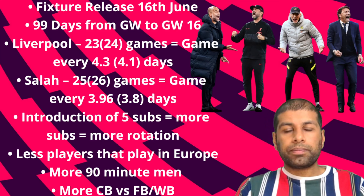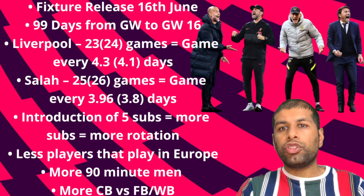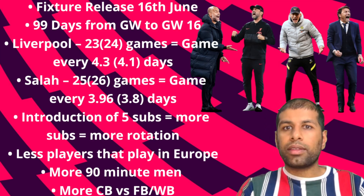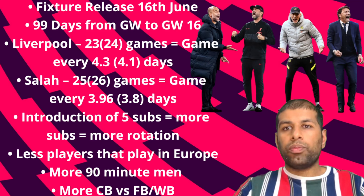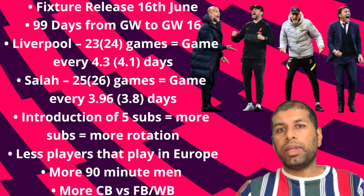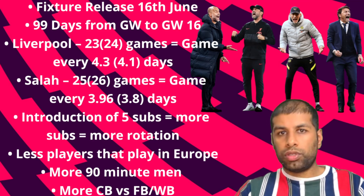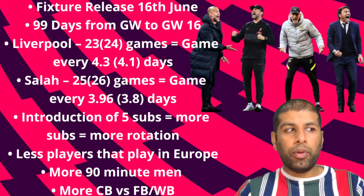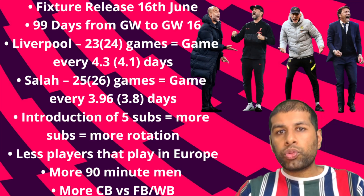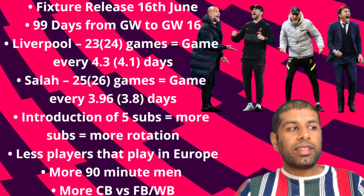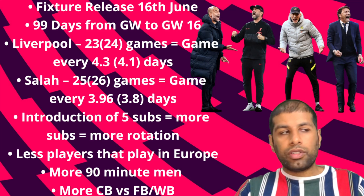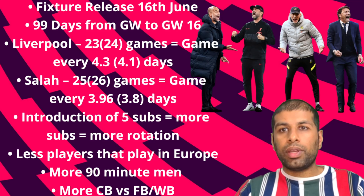Using Liverpool and Salah as extreme but realistic examples: Liverpool will have a minimum of 23 games during this period — that's a game every 4.3 days. Potentially 24 if they play the Super Cup, which is a game every 4.1 days. Traditionally, the big clubs have the first three or four weeks with just one game a week, but there's a realistic possibility they could have two games a week immediately — hitting the ground running right from the start.